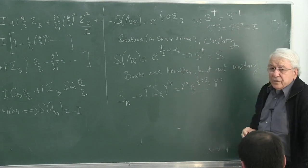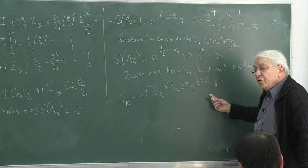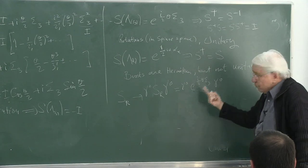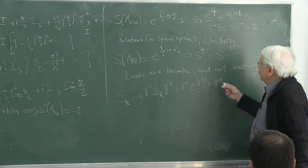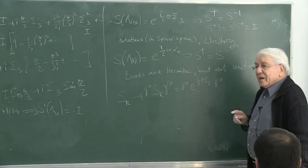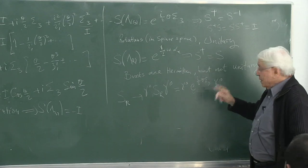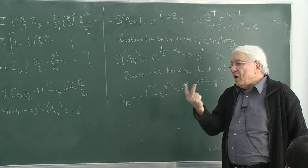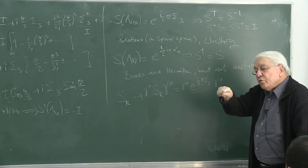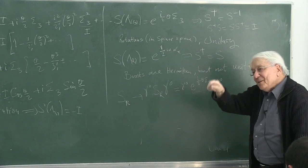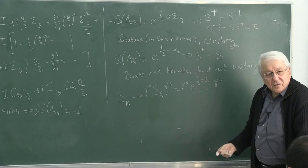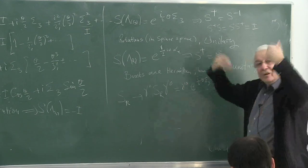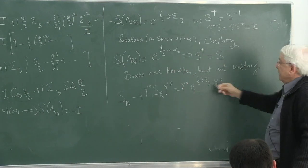If I take the rotation S_R and sandwich it between two gamma-zeros, I get gamma-zero e^{i theta/2 sigma_3} gamma-zero. I expand: the first term is identity, so gamma-zero times one times gamma-zero gives gamma-zero squared which is identity. The second term involves sigma-3. Gamma-zero commutes over two space gammas with two minus signs canceling, so nothing changes. Resumming, I get S_R itself.